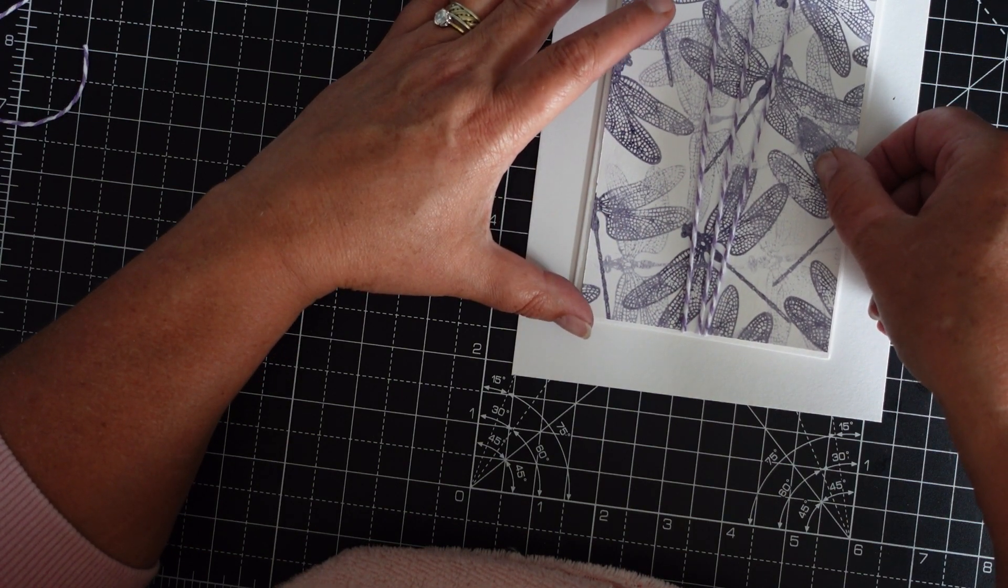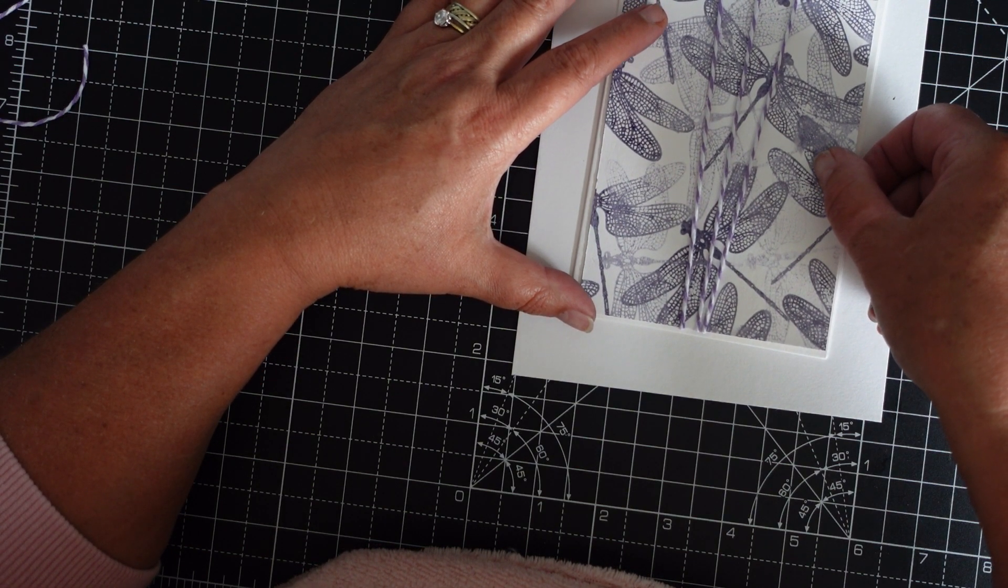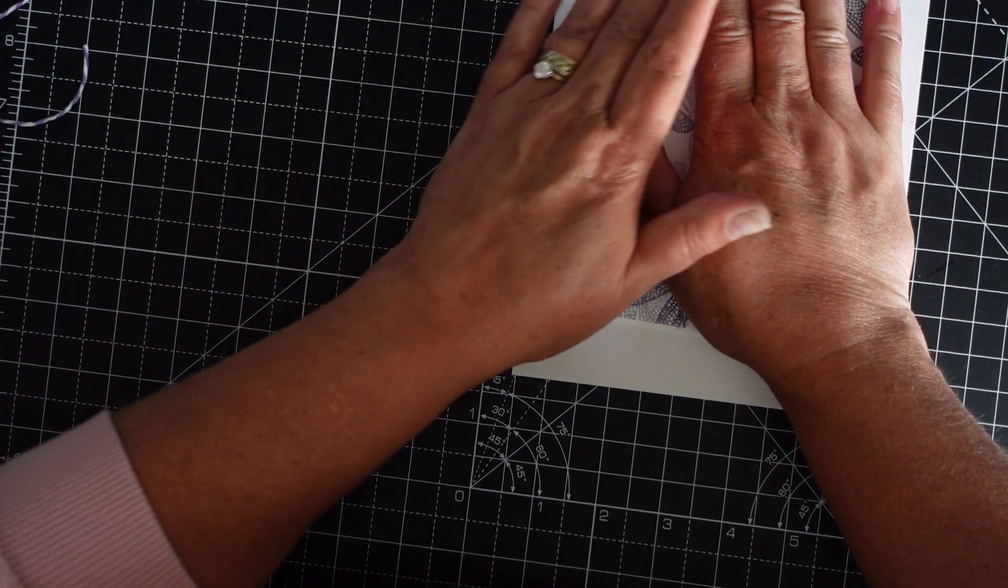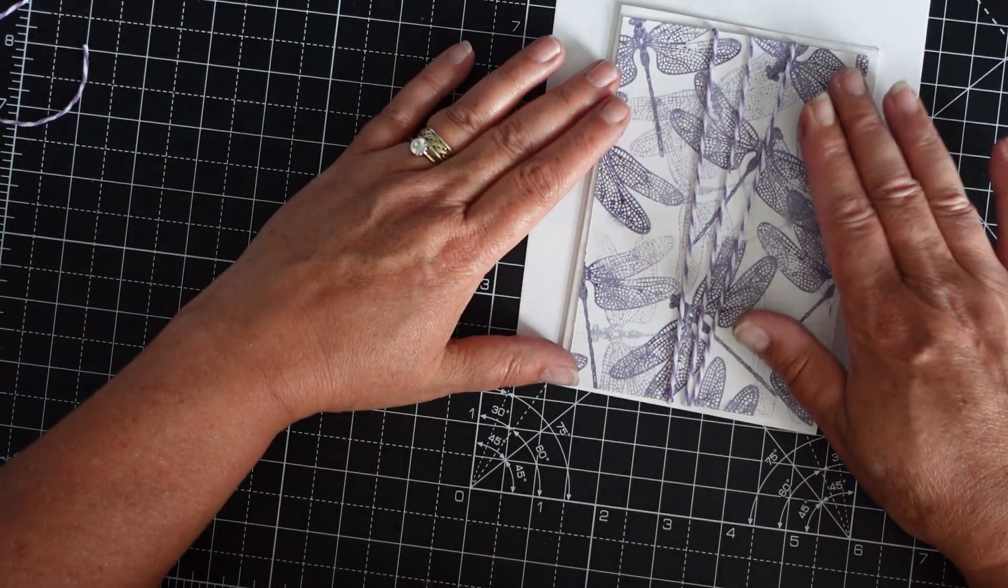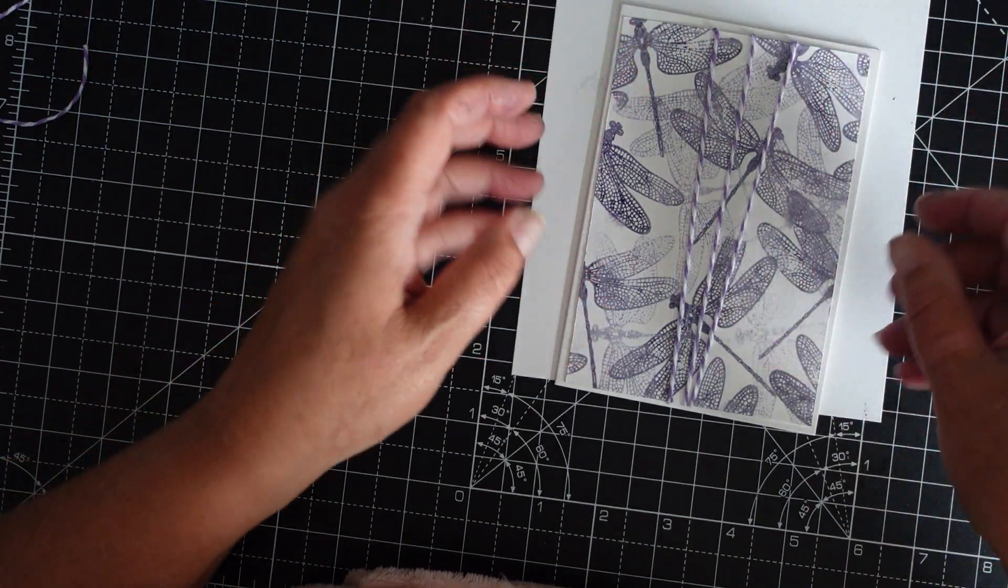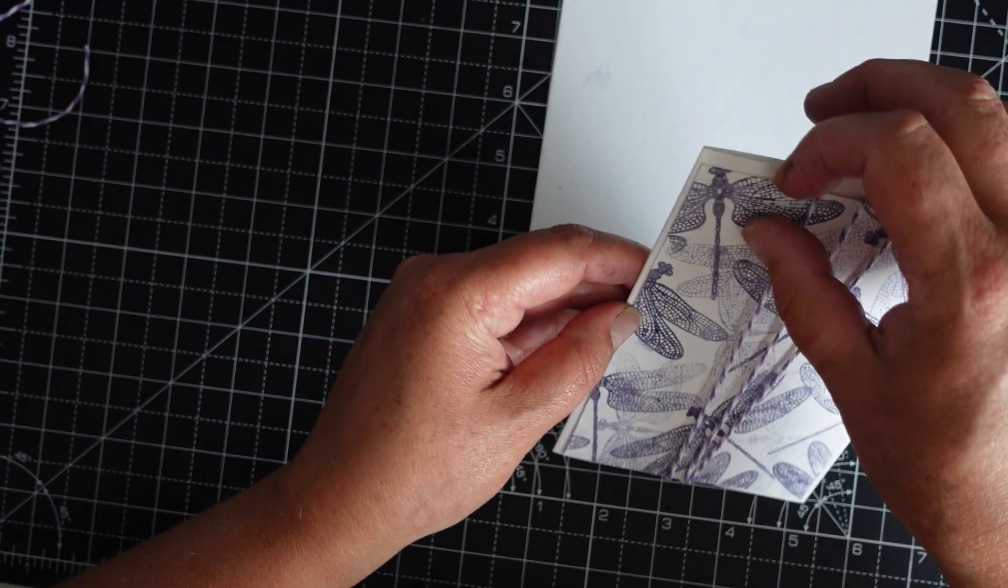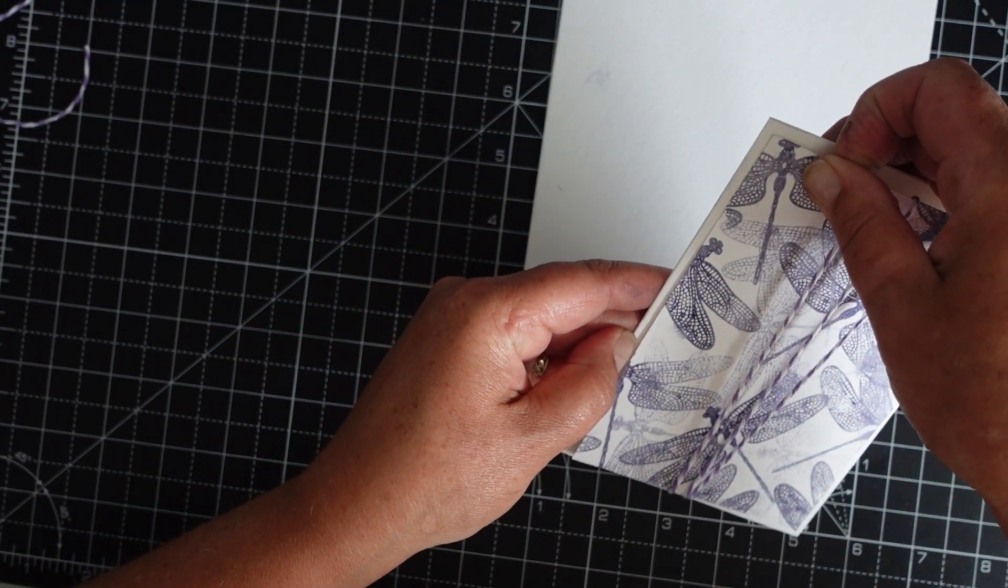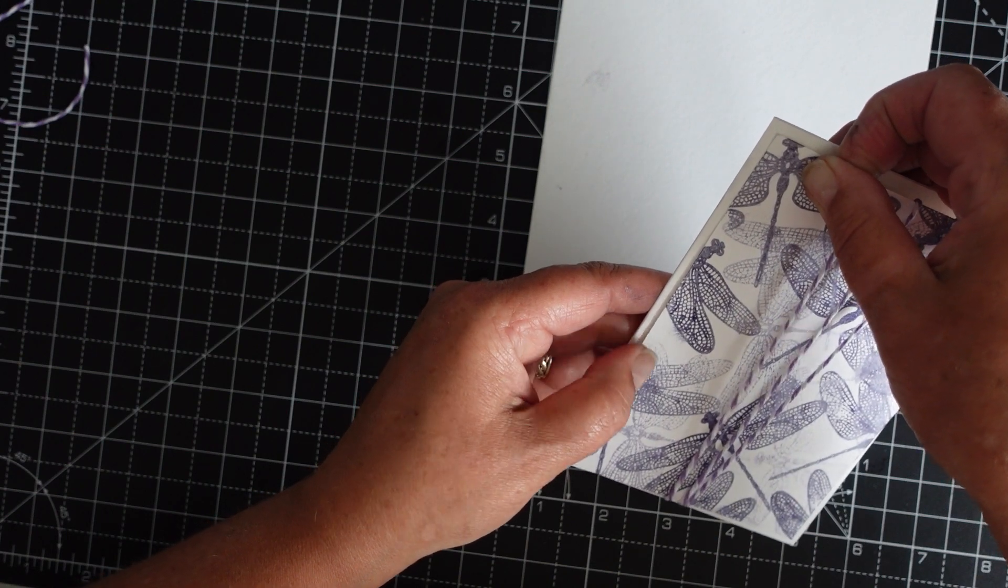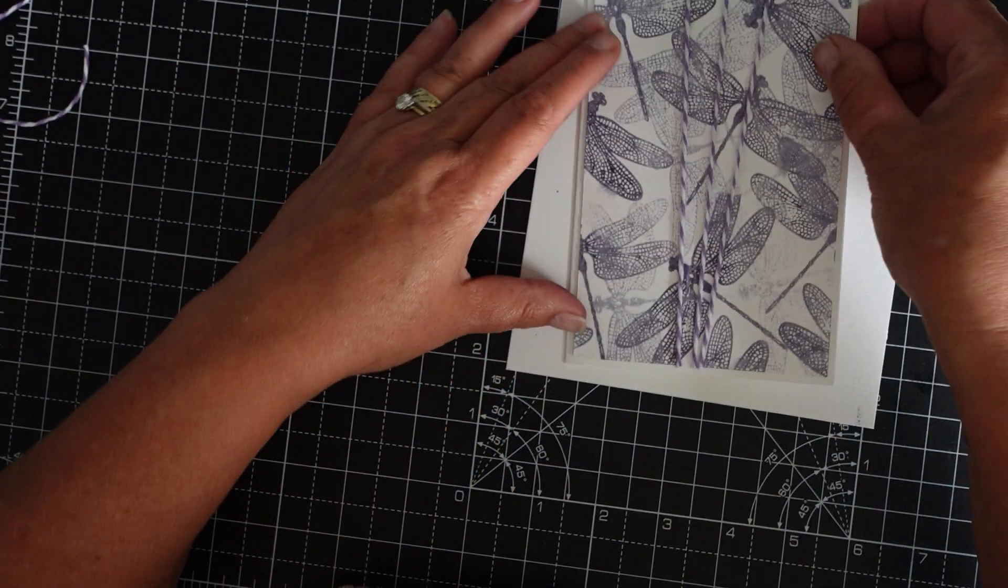I could have put some coordinating card underneath, but didn't think. Oh sorry, I'm out of shot. Yeah, I'm not very straight. Like so.